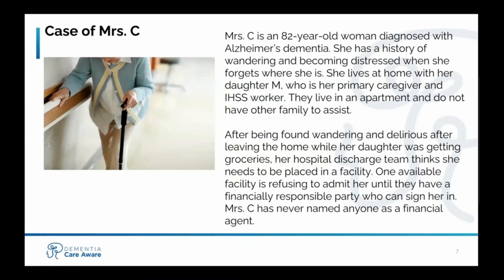To help illustrate the benefits of advanced care planning, I'd like to introduce the case of Mrs. C. Mrs. C is an 82-year-old woman diagnosed with Alzheimer's dementia. She has a history of wandering and becoming distressed when she forgets where she is. She lives at home with her daughter M, who is her primary caregiver and IHSS worker. They live in an apartment and do not have other family to assist. After being found wandering and delirious after leaving the home while her daughter was getting groceries, Mrs. C's hospital discharge team thinks she needs to be placed in a facility. One available facility is refusing to admit her until they have a financially responsible party who can sign her in. Mrs. C has never named anyone as a financial agent. Does she need advanced care planning, and what elements might she need?